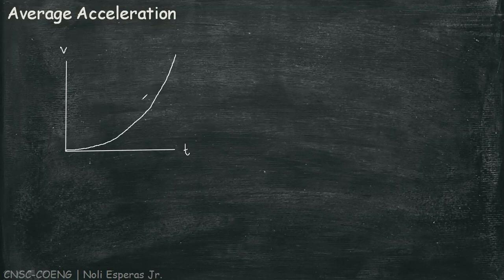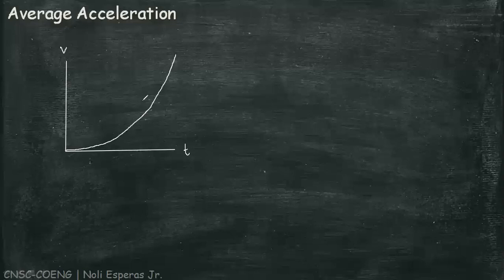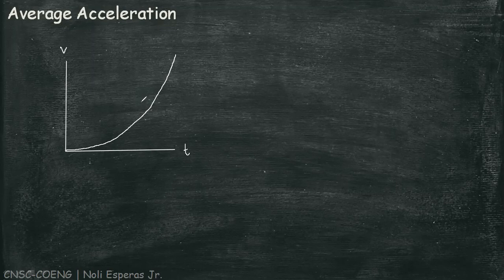This graph does not represent the track of an object it takes in space. Instead, it is the velocity of the object at any given time. So, getting the acceleration at point P-O and point P-F.